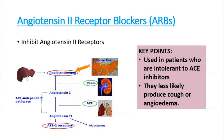Now let's move to angiotensin-2 receptor blockers, ARBs. They inhibit angiotensin-2 receptors directly. Before, we were inhibiting ACE so there would be no angiotensin-2 produced; now we are directly blocking the angiotensin-2 receptor itself. So the factors which increase blood pressure are blocked, and consequently blood pressure is lowered. Key point: ARBs are used in patients who are intolerant to ACE inhibitors. If a cough is produced or there are contraindications, we use ARBs because they are less likely to produce cough or angioedema.